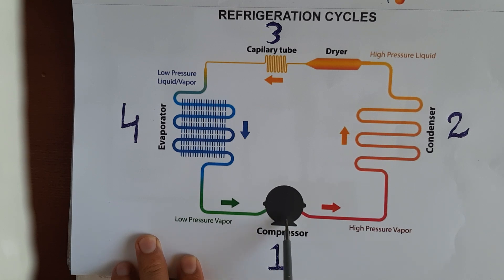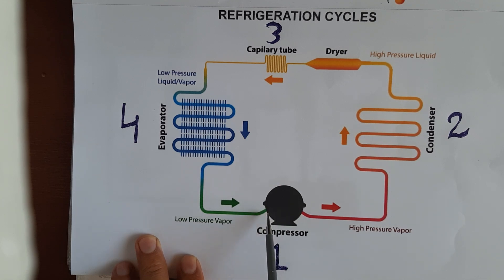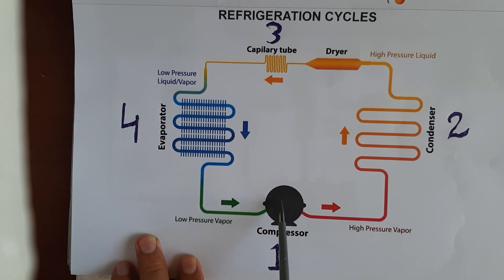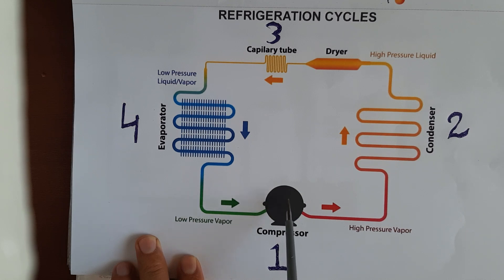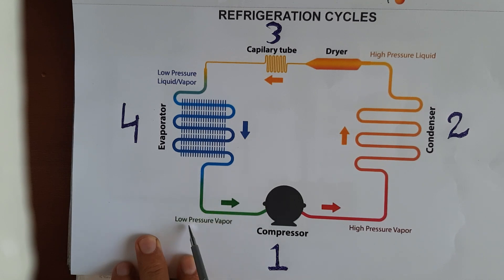Now we need to discuss the compressor first — how the compressor works. The compressor has two parts: one electrical and one mechanical. The electrical part is an electric motor, and the mechanical part is a mechanical pump. The electric motor runs on electricity and the same motor drives the pump.